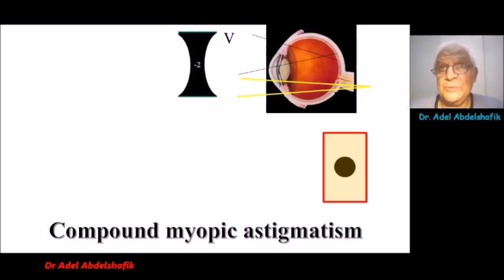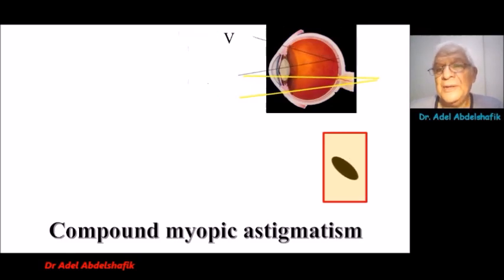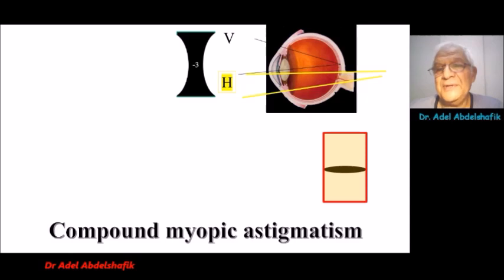We call this the circle of least confusion. And in the last example, the patient will see horizontal. The spot will be expanded in a horizontal way.